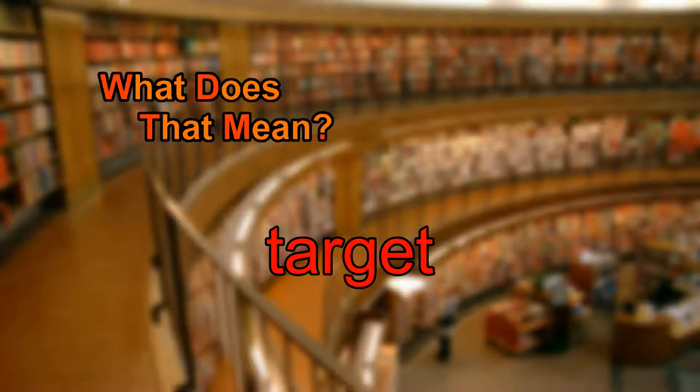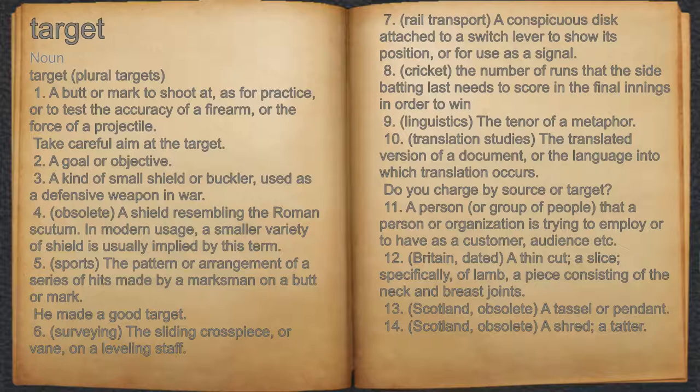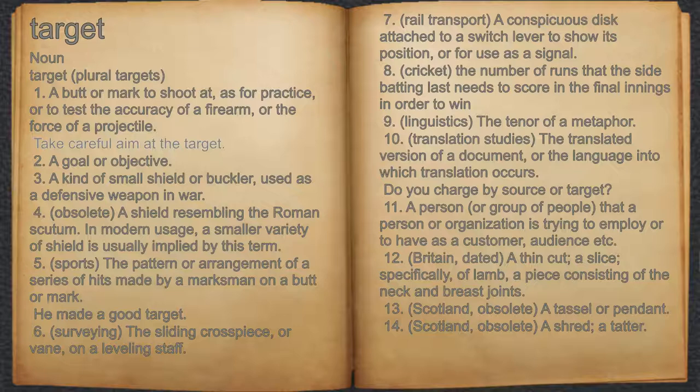What does target mean? Target. Noun. 1. A butt or mark to shoot at, as for practice, or to test the accuracy of a firearm, or the force of a projectile. For example, take careful aim at the target. 2. A goal or objective.